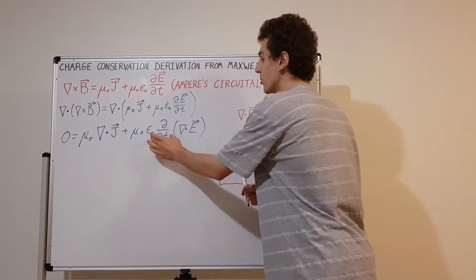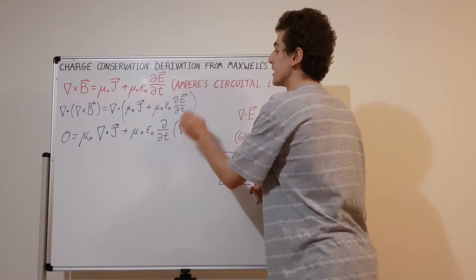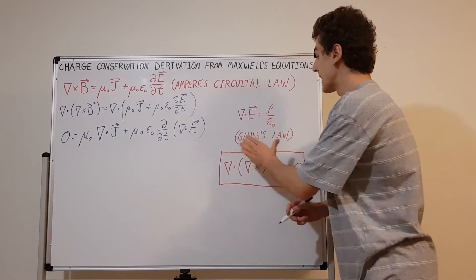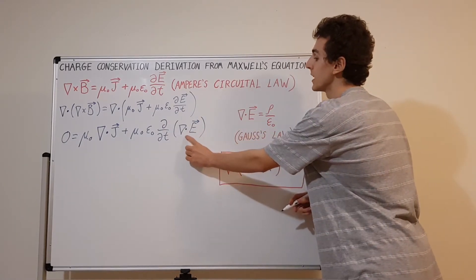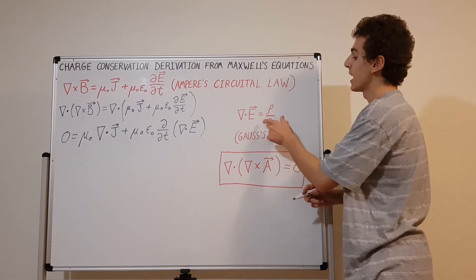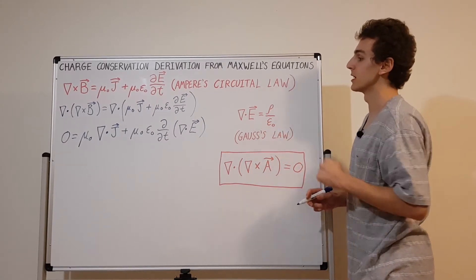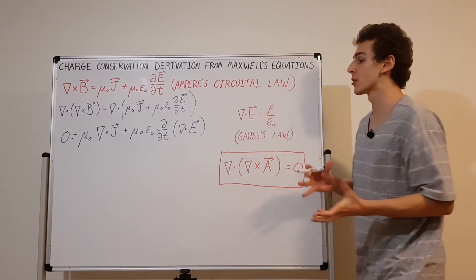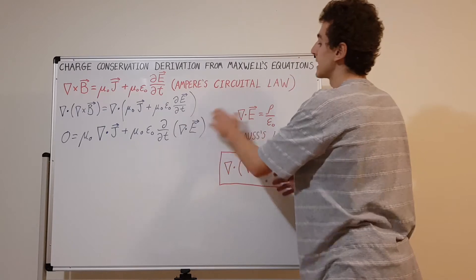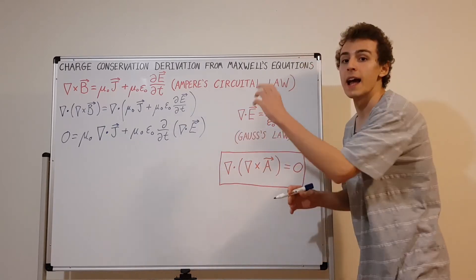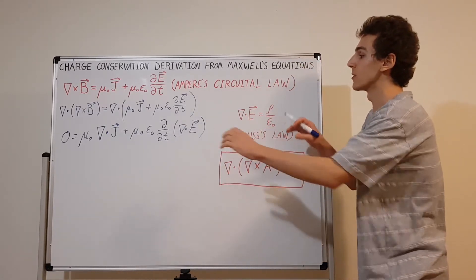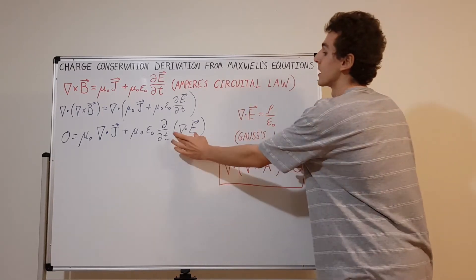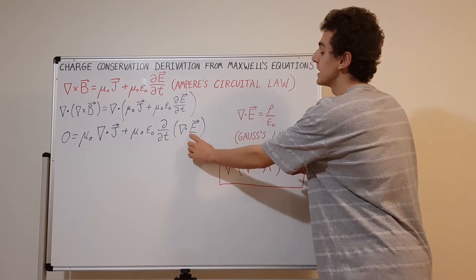Why did we swap the order of the time derivative and the divergence? Because now we can apply Gauss's law, which says the divergence of the electric field equals the charge density rho over epsilon-nought. The divergence of a vector quantity gives a scalar — you add up the partial derivatives of all components — so this yields a scalar even though E is a vector.